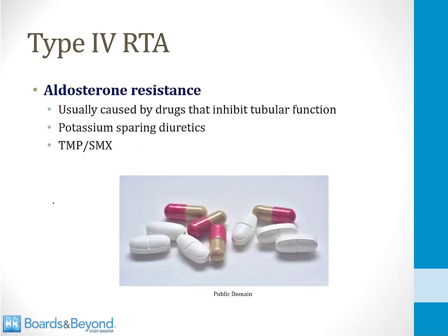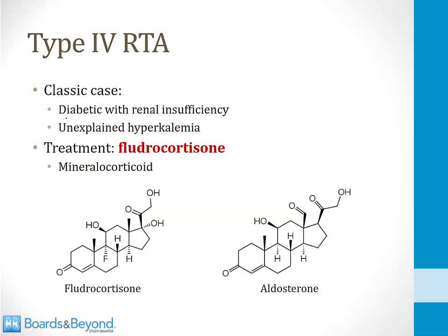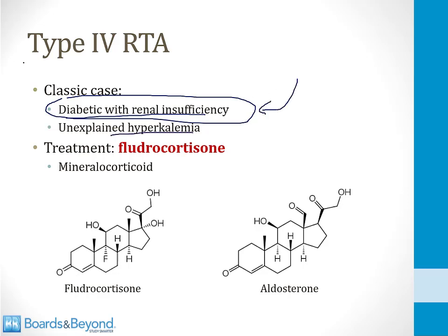You can also develop a type 4 RTA if the nephron becomes resistant to aldosterone, usually caused by drugs that inhibit tubular function. Classic drugs to do this are potassium-sparing diuretics and Bactrim. With potassium-sparing diuretics, the goal is to block aldosterone effects, so naturally they cause a high potassium level and a mild metabolic acidosis as described for a type 4 RTA. The classic case is a diabetic with mild renal insufficiency — most cases of type 4 RTA occur among these types of patients. A patient like this who presents with unexplained hyperkalemia and a low serum bicarb probably has a type 4 RTA. You can treat this form with fludrocortisone, a mineralocorticoid with a structure very similar to aldosterone, given as an oral drug to bring the potassium down and improve the acidosis.